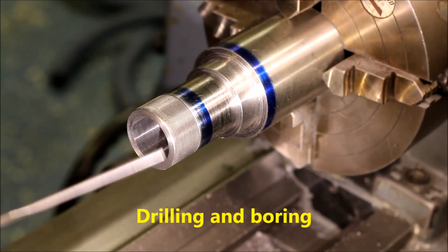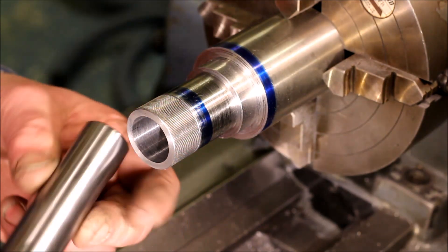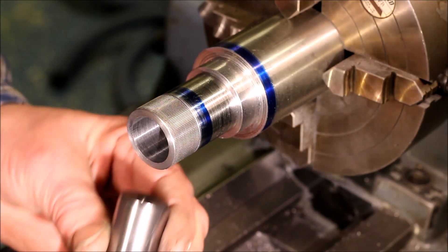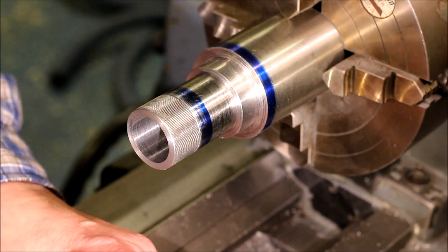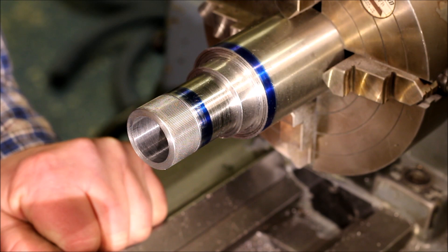Now I have to bore this sleeve to one inch exactly to fit this Morse adapter. According to the plans, it should be as close to one inch as possible. One thousandth of an inch above is okay - that is two and a half hundredths of a millimeter.